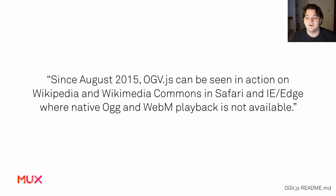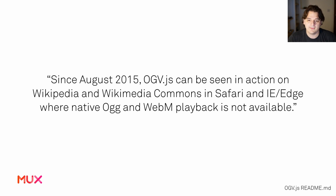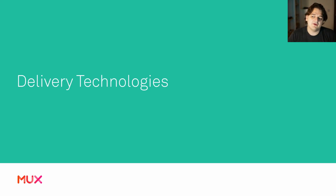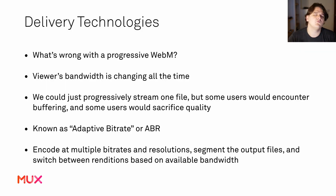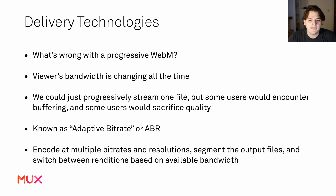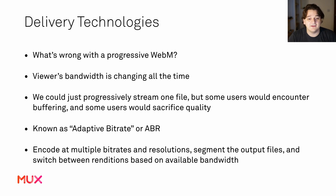These are our three problematic browsers — Safari on desktop, Safari on iOS, and Chrome on iOS — and they're all now happily playing our VP8/VP9 file. This is totally how Wikipedia does it: since August 2015, ogv.js has been used on Wikipedia and Wikimedia in Safari, IE, and Edge where Ogg and WebM playback isn't available. But this is only part of the story, because we also need a delivery technology. The problem with just delivering a progressive WebM file is that viewers' bandwidth is changing all the time.